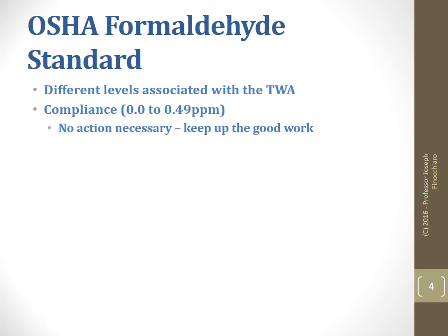Within the TWA — time-weighted average — we have three levels. First is compliance: 0.0 to 0.49 parts per million. Many of us just say 0 to 0.49, and understand we do not round numbers — whatever number it gives you, that is the number you use. If you're in compliance, go out and get a beer. Congratulations, you're doing fine work.